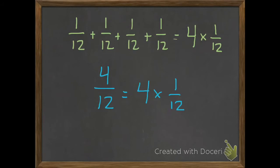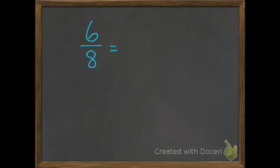Let me show you another example. We're going to start with 6 eighths. You can break that up into 1 eighth plus 1 eighth plus 1 eighth plus 1 eighth plus 1 eighth plus 1 eighth, or it's much simpler if we just write that as 6 eighths. Then we're going to make a multiplication equation that equals 6 eighths — so we have 6 of these 1 eighths, and we can write 6 eighths as 6 times 1 eighth.